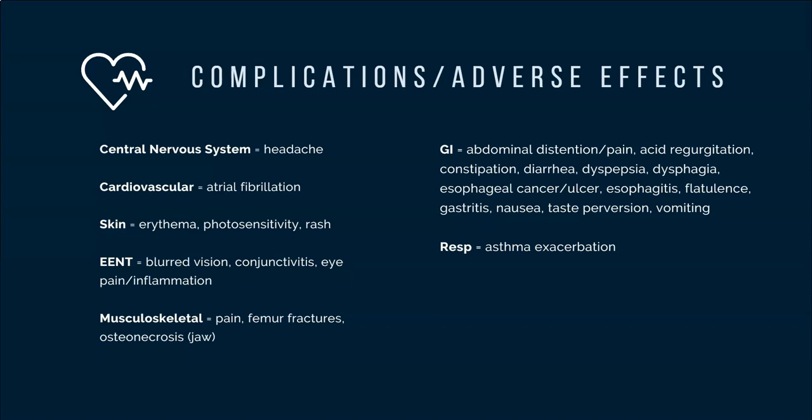We see asthma for the respiratory system. However, we are going to focus on the gastrointestinal tract because there are a lot of adverse effects. They include abdominal distention and pain, acid regurgitation, constipation, diarrhea, dyspepsia — which is just indigestion — dysphagia, which is difficulty swallowing, esophageal cancer and ulcer, esophagitis, flatulence, gastritis, nausea, taste perversion, and vomiting.